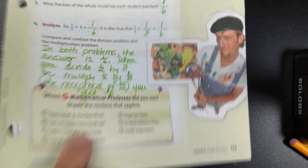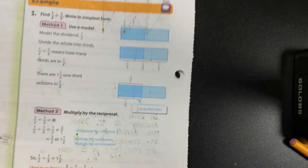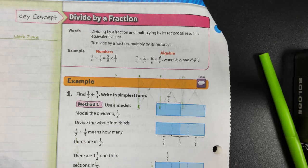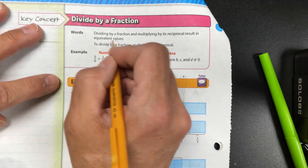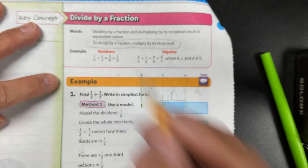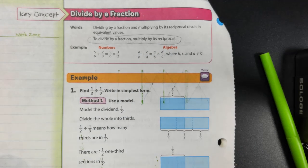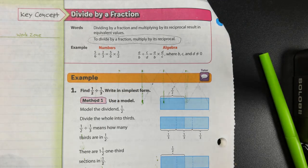Moving to page 164. Remember, at any point you can pause the video or go back and rewatch — that's the beauty of having the video. The key concept: when you divide by a fraction, you multiply by its reciprocal. That sums it all up. They've given you an example with numbers and an example algebraically with variables so you can see how that works.